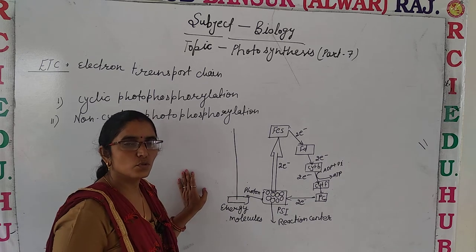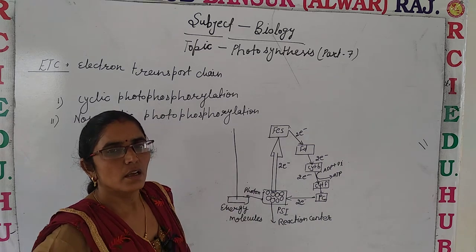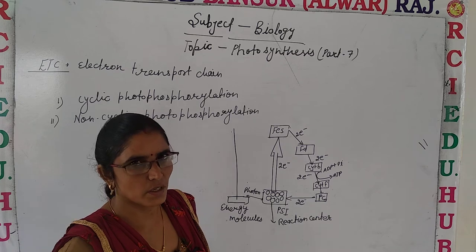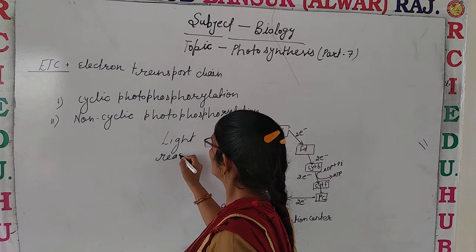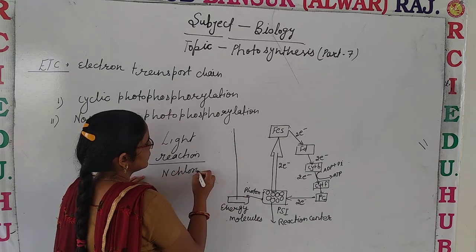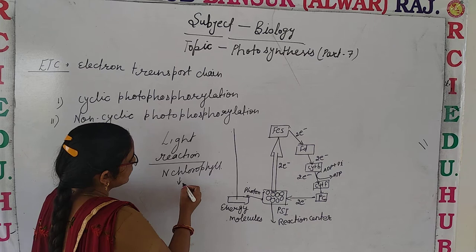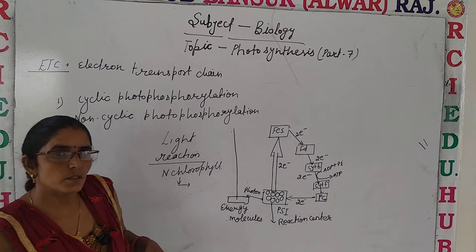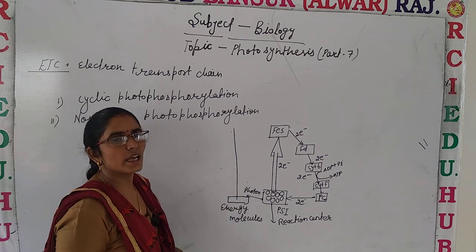What happened in photosystem 1 and photosystem 2? We discussed about the mechanism, about their reaction center, accessory pigments and how they absorb energy in the form of photon and pass it on to the next electron acceptor. During the light reaction, normal chlorophyll absorbs energy in the form of photon and goes into the excited state. That energy is utilized in the splitting of water, which results in producing oxygen, protons, and electrons.